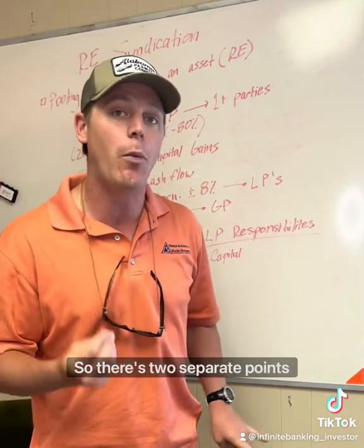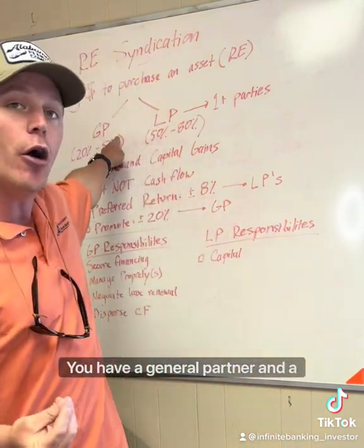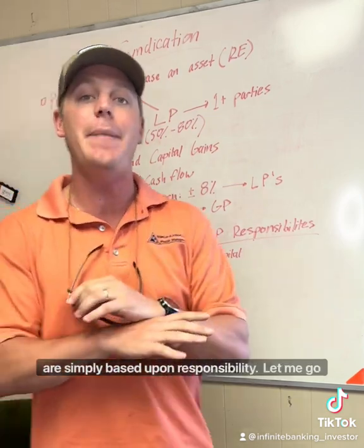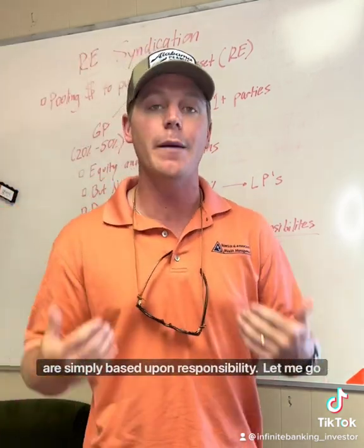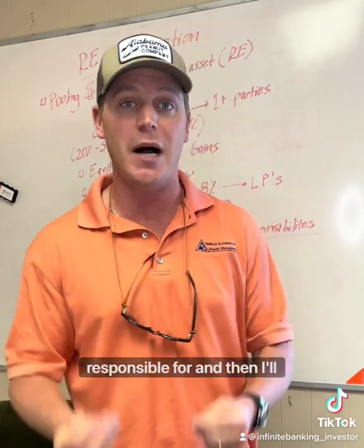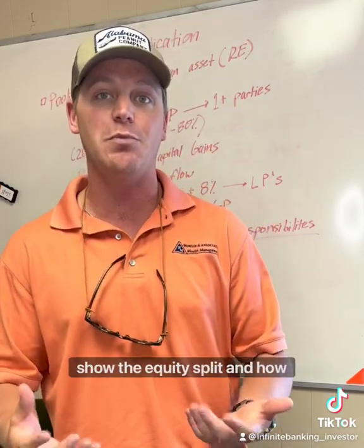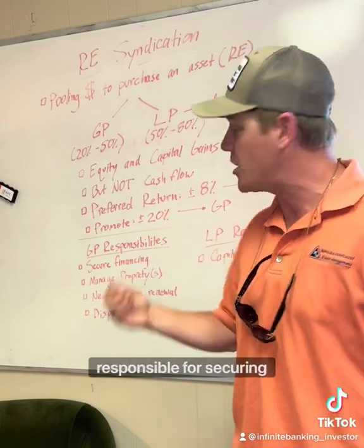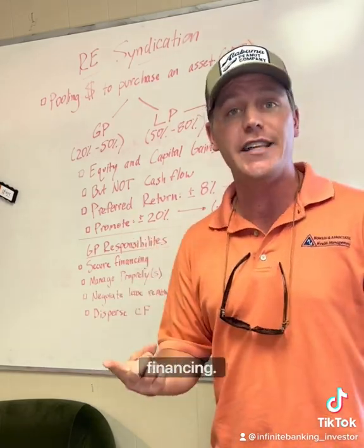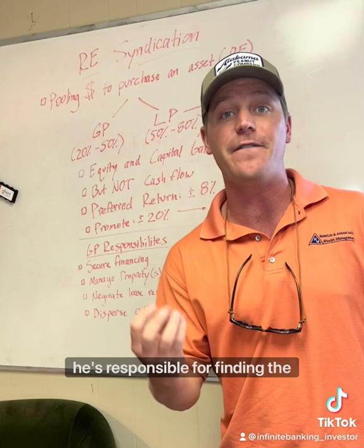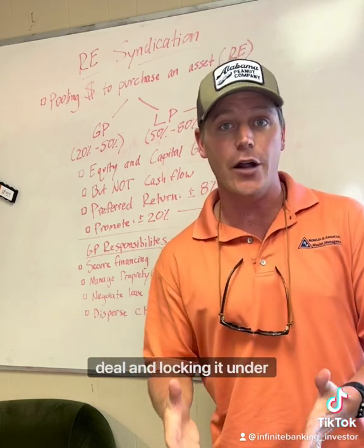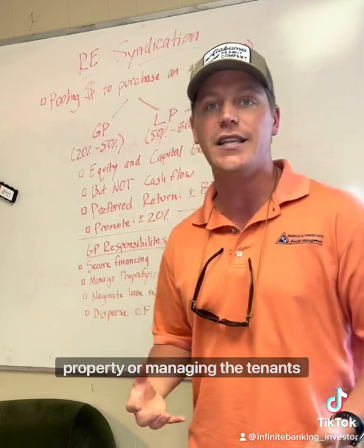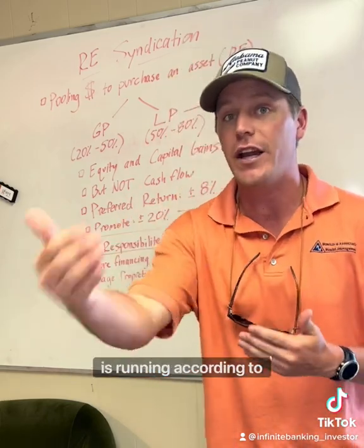There are two separate parts to this. You have a general partner and a limited partner, and the difference between the two is simply based upon responsibility. The general partner is responsible for securing financing with the bank, finding the deal and locking it in under contract, and managing the property and the tenants, making sure that everything is running according to plan.